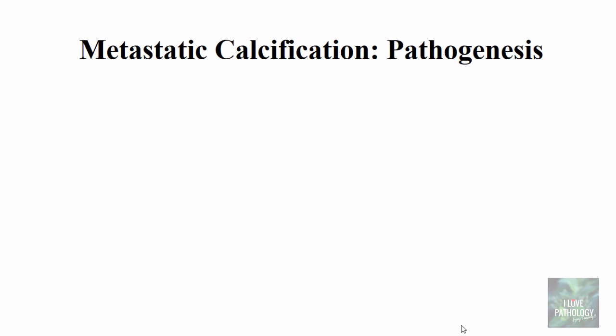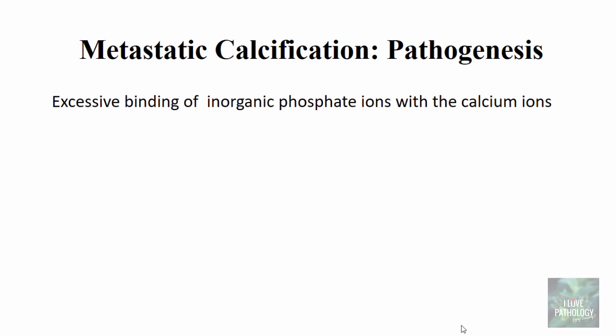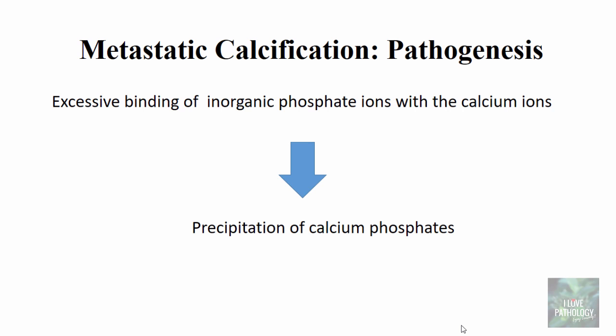The pathogenesis of metastatic calcification is simpler because you already have increased calcium — you don't need to depend on dead and degenerated tissues for calcium. This increased calcium binds to inorganic phosphate ions, leading to the formation of calcium phosphate. Essentially the steps remain the same; the key difference is that in metastatic calcification calcium is already elevated, whereas in dystrophic calcification calcium must be found within dead and degenerated tissues.